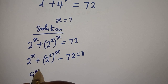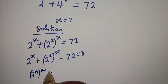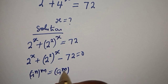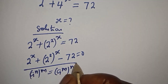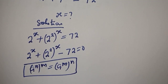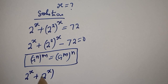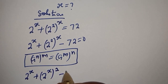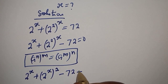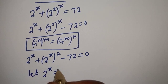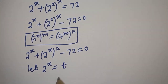If you have a raised to power n, to the power of m, it is equal to a raised to power m to the power of n. So this becomes 2 raised to power s plus 2 raised to power s squared minus 72 is equal to zero. Let 2 raised to power s equal to t.